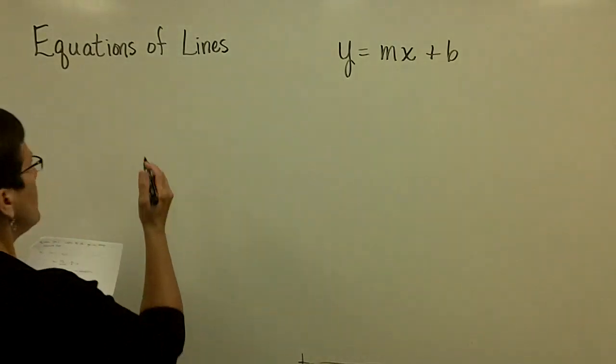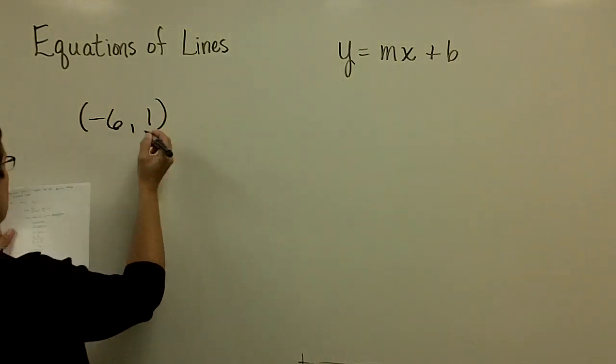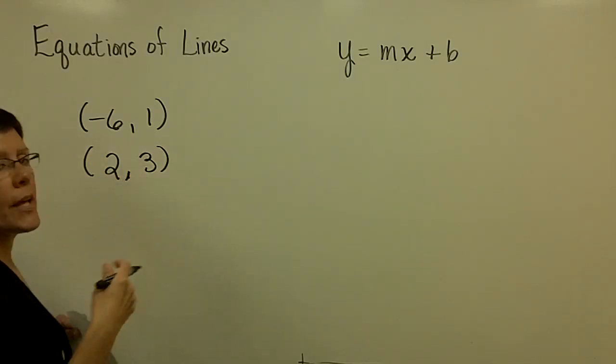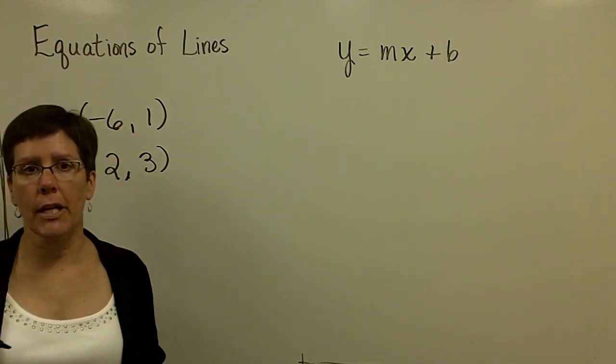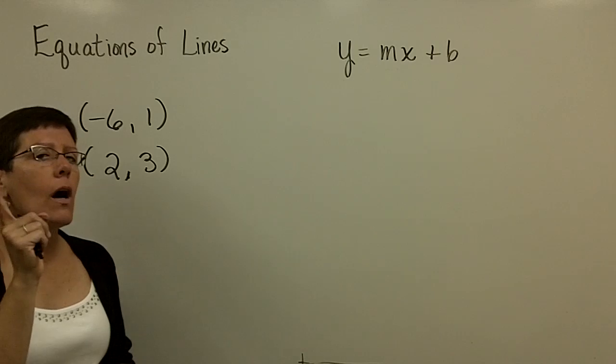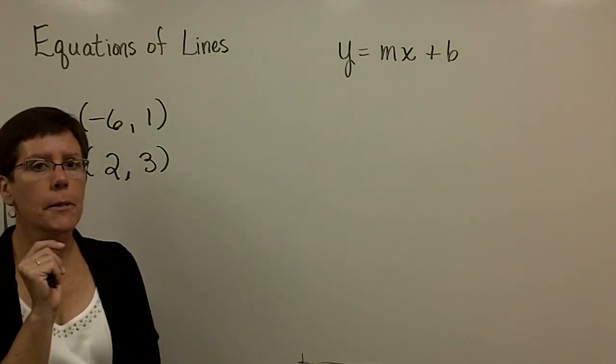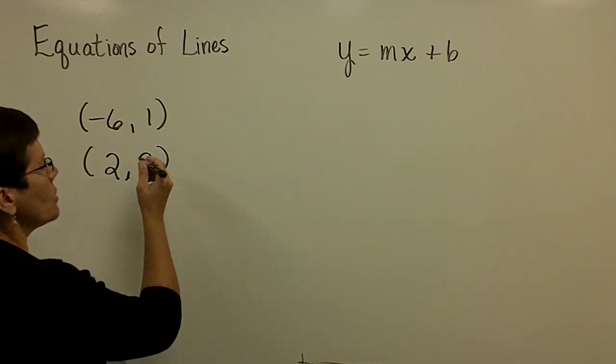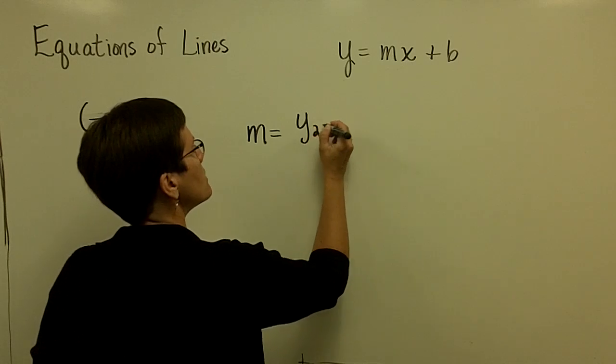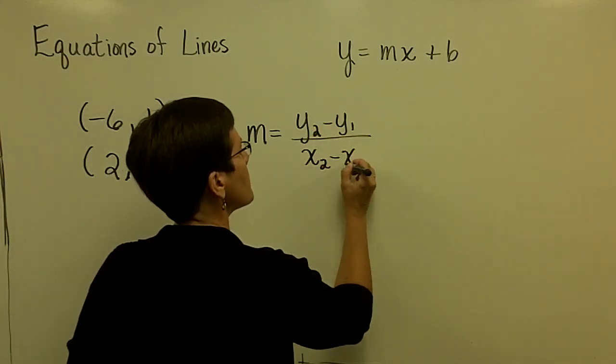So let's go ahead with a negative 6 comma 1 and 2 comma 3. One of the things that should go through your mind any time you see two ordered pairs and you're working with linear equations is you should say to yourself, if I have two ordered pairs, I can find the slope if I would like. So that's one of the things that you should do. So given those two values, let's find the slope of this line, which is done by taking y sub 2 minus y sub 1 and dividing it by x sub 2 minus x sub 1.